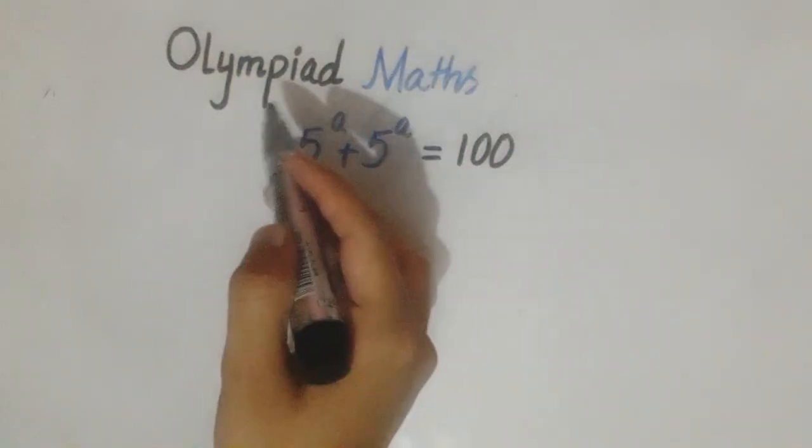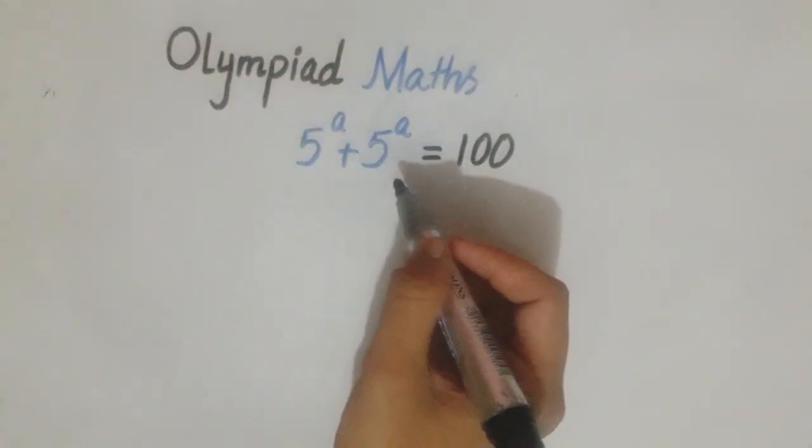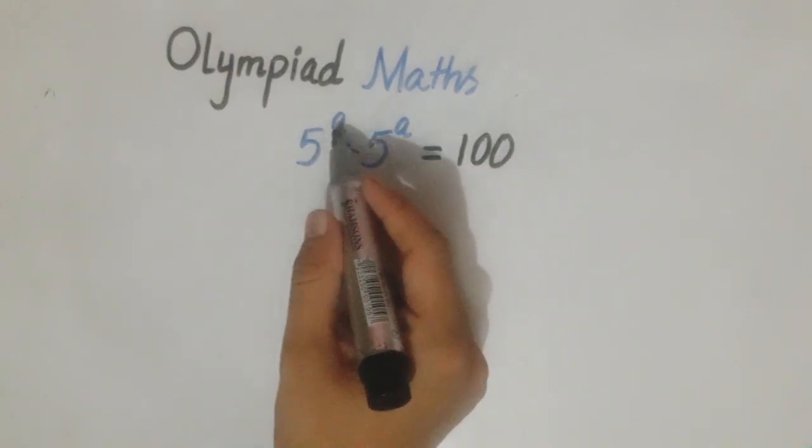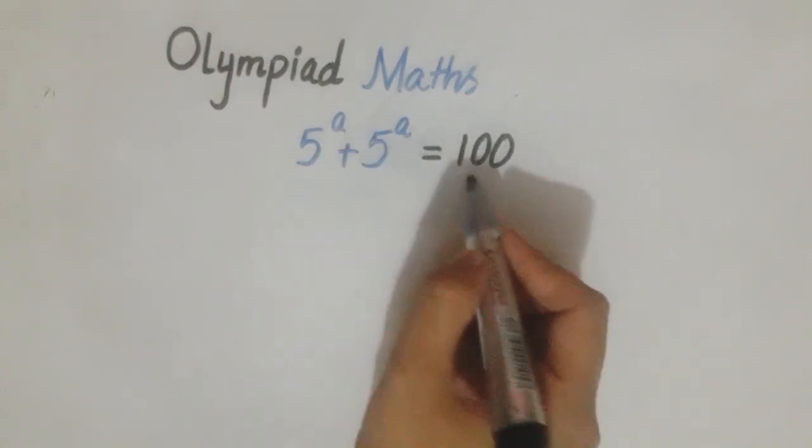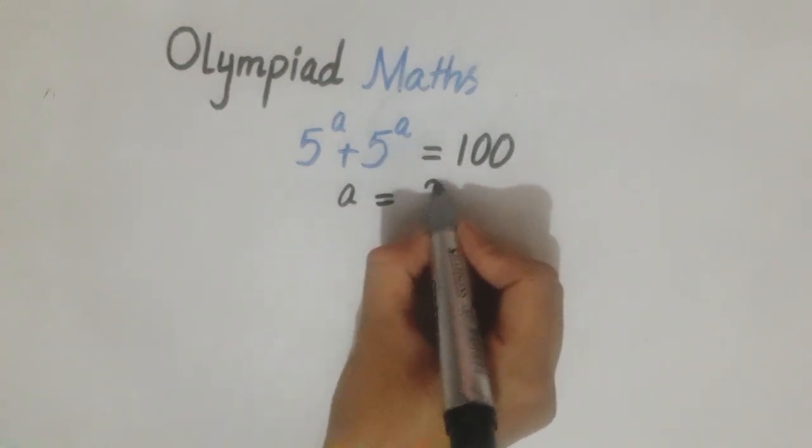Welcome back to Math Solver 1117, where math becomes easy and fun. In this video we will solve an Olympiad math problem: 5 raised to power a plus 5 raised to power a equals 100. You have to find the value of a.